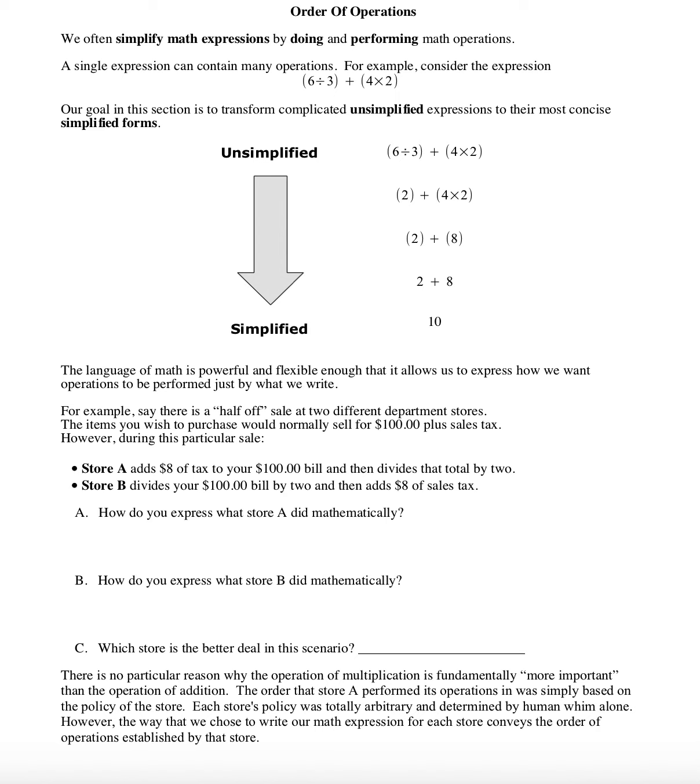Store A adds $8 of tax to your $100 bill and then divides that total by two. Store B divides your $100 bill by two and then adds $8 of sales tax.